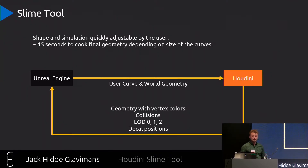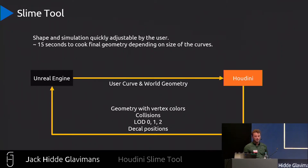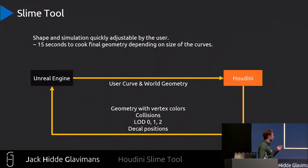The slime shape and simulation are quickly adjustable by the user. The final result takes about 15 seconds to generate, but this of course gets increasingly longer when you create a lot of slime. The tool uses the user curve and the world geometry, then outputs a complete package with fur shaders, collisions, LOD levels, and point instances for decals.